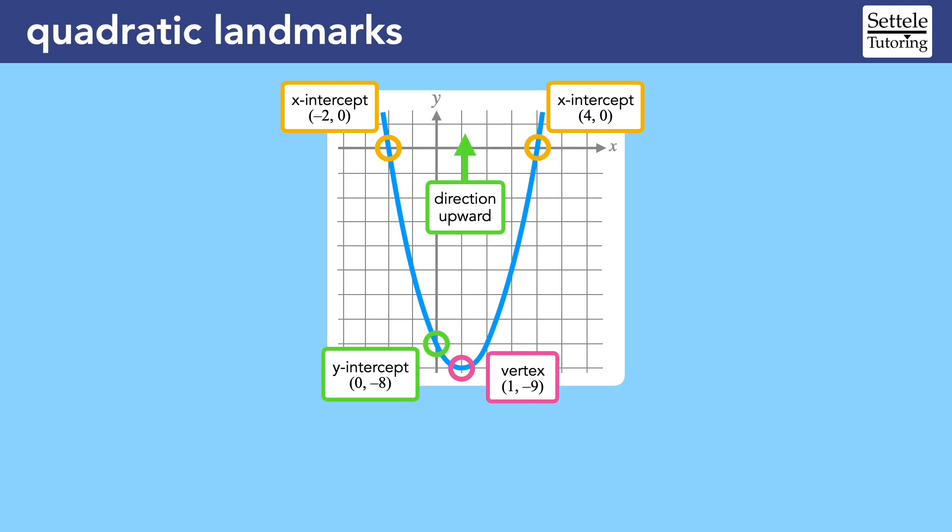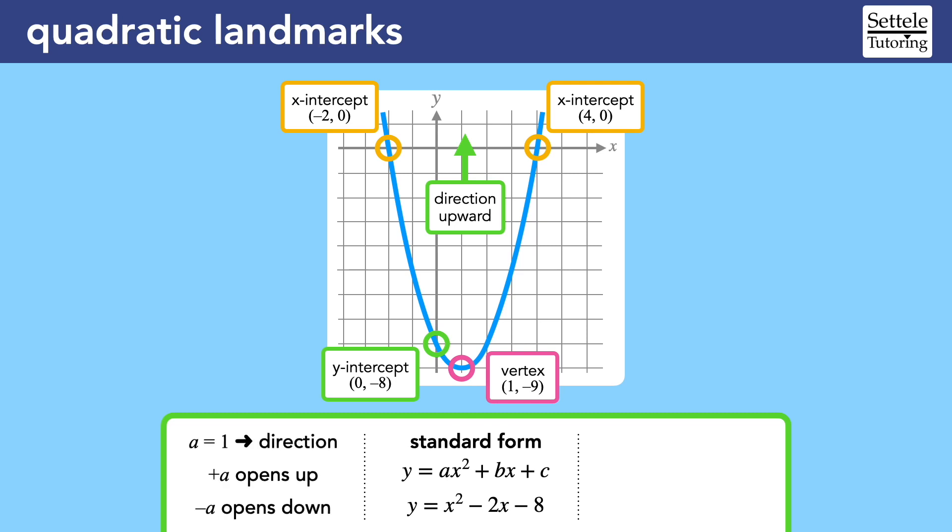The most important quadratic equation is standard form, which will look like y equals ax-squared plus bx plus c. The a represents the direction of the parabola. If a is positive, the parabola opens upward. If a is negative, the parabola opens downward.